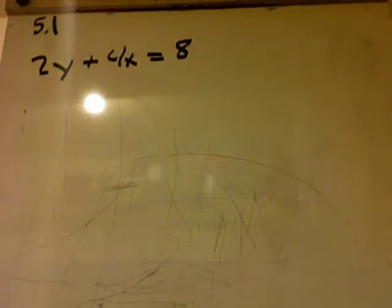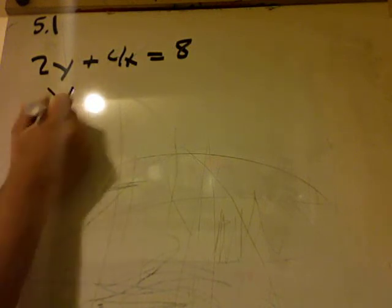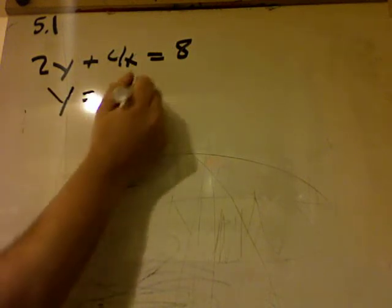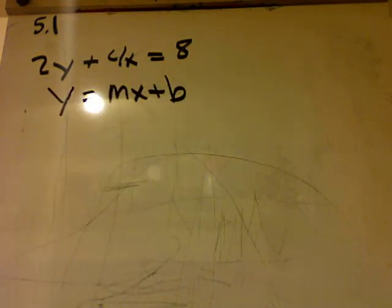All right, so I've got an equation that looks like this. What I want to do is identify what the slope and the y-intercept are. The problem is it's not in this form, y equals mx plus b, and it doesn't look anything like that.